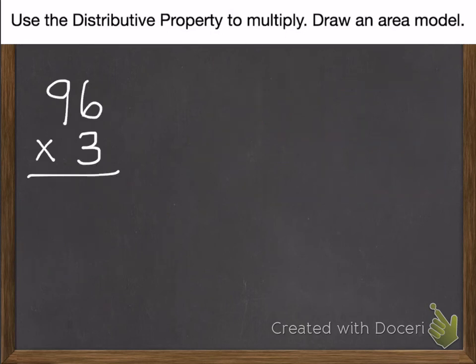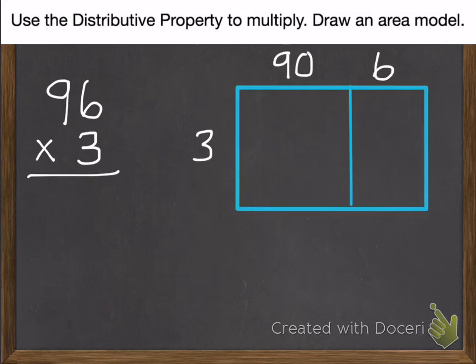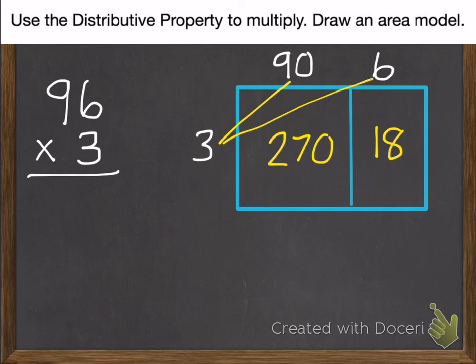Second practice problem. Go ahead and multiply 96 times 3, and pause. 96 times 3. We break apart the 96 into 90 and 6. 3 times 6 is 18. 3 times 90 is 270. Add those together. You get 288.